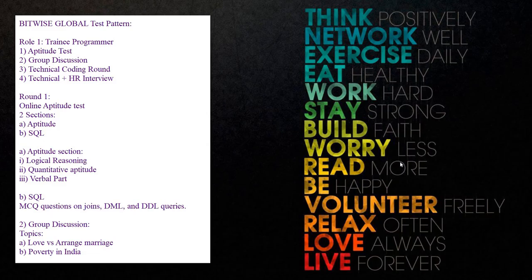For Role 1, that is Trainee Programmer, there are four different rounds. The first is the aptitude test, second is group discussion, third is a technical coding round which is a pen and paper based exam, and the fourth round is a combination of technical as well as HR interview. These are the four rounds included in the selection process for Bitwise Global for the Trainee Programmer role.